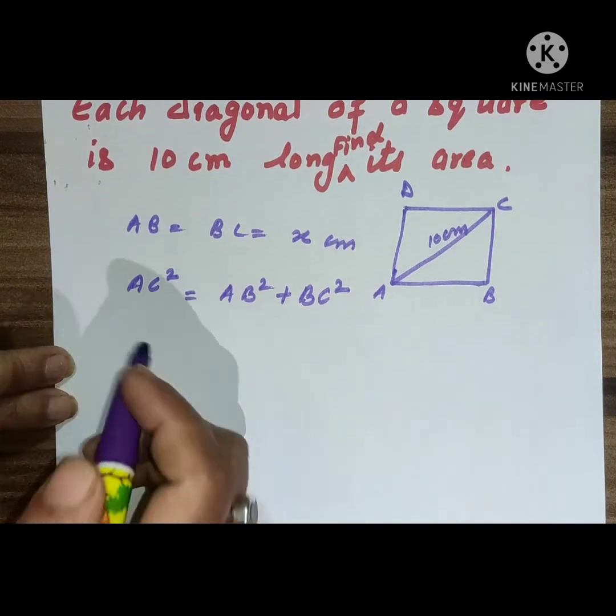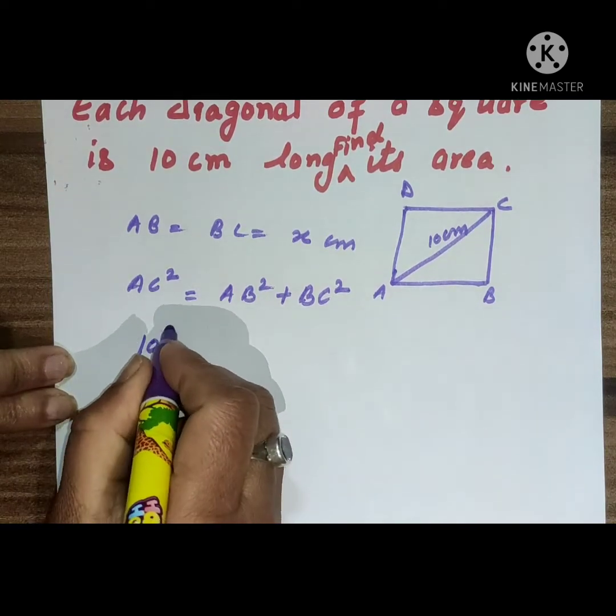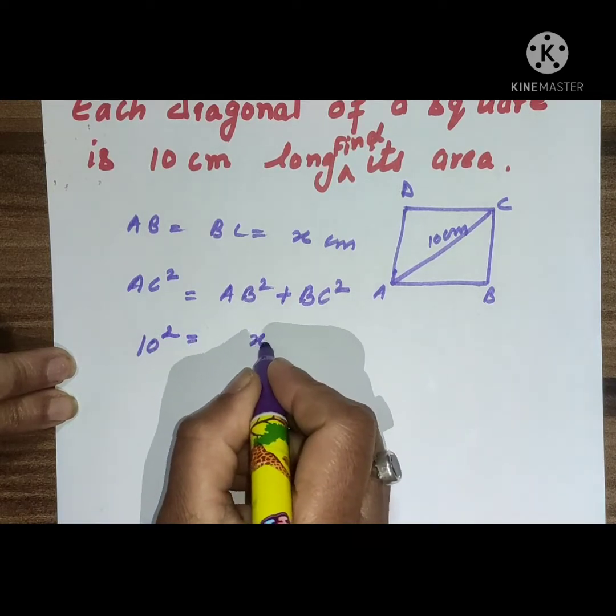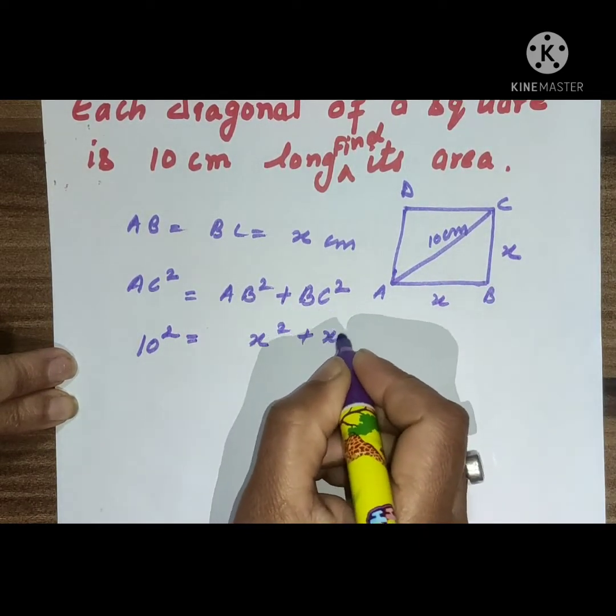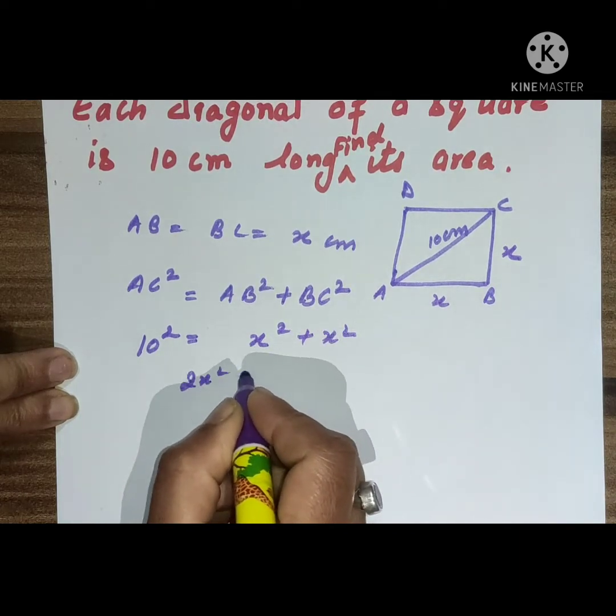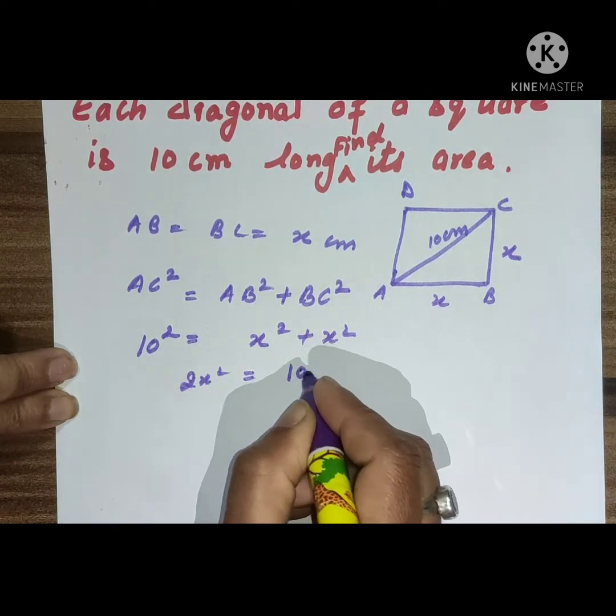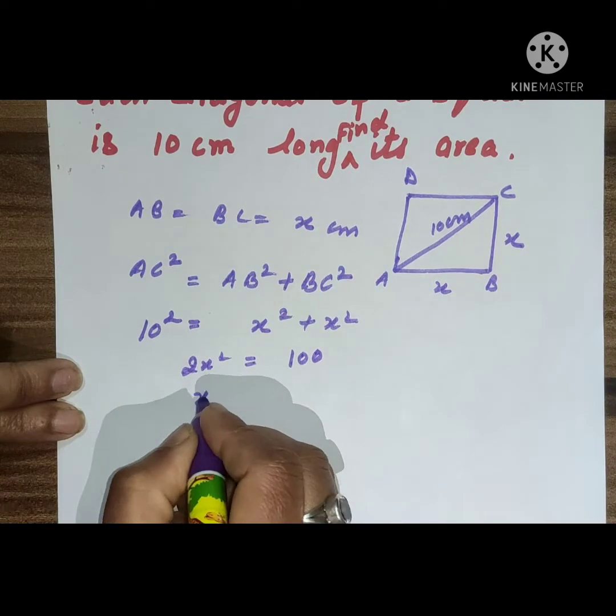So students, AC is 10 squared, and AB is x squared, BC is also x squared. This is equal to 2x squared equals 10 squared, means 100. So x squared is equal to 100 divided by 2, it becomes equal to 50.